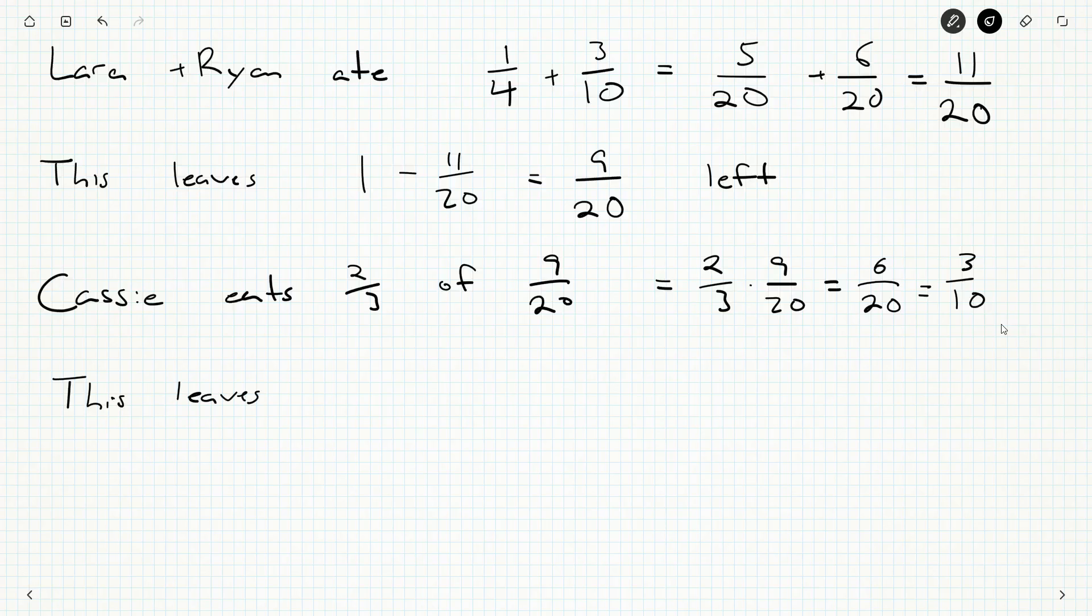This leaves not one minus three tenths because we're not starting with one whole pie. We've got nine tenths left. Sorry, not nine tenths, nine twentieths. And we subtract fractions by the exact same method as we add them. We get a common denominator. So, it'll leave three twentieths.